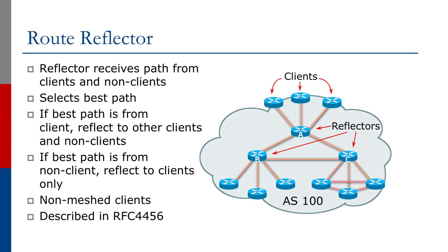The route reflector specification is described in RFC 4456. The simple summary is: the route reflector receives paths from clients and non-clients and selects the best path. If the best path is from a client, it reflects to other clients and non-clients. If the best path is from a non-client, it reflects only to the clients. So any prefix router A learns from router B will only be sent to clients, not to other normal BGP speakers.